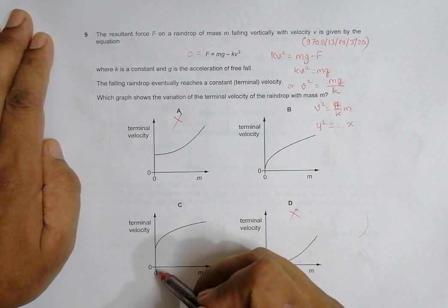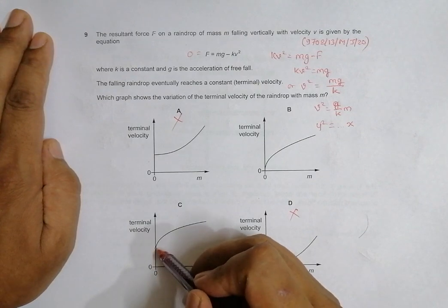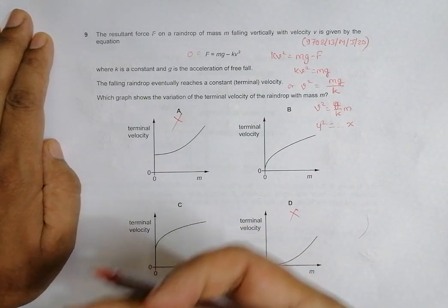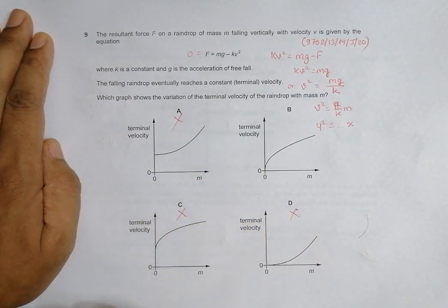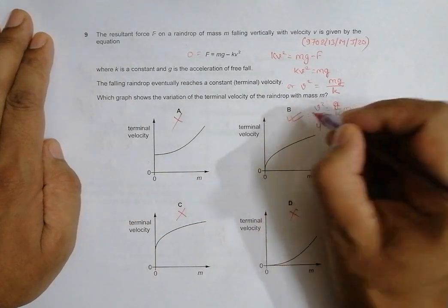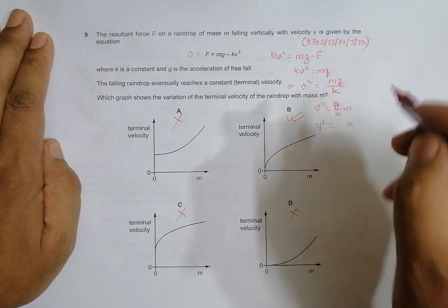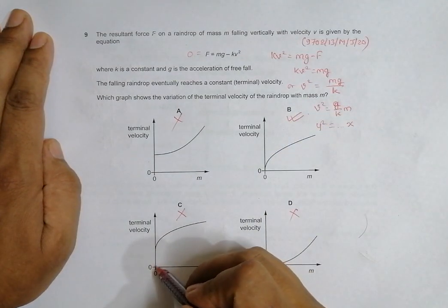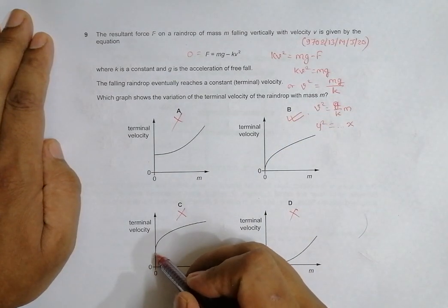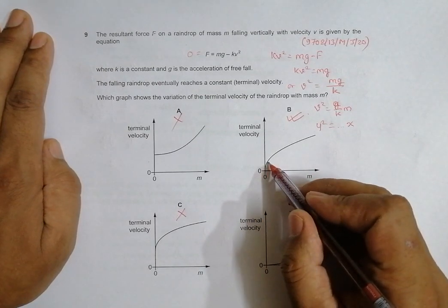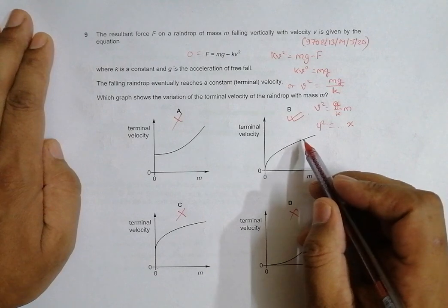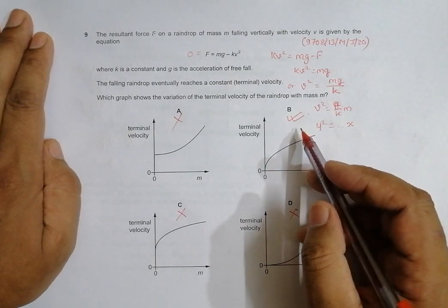But here at zero mass it has got some velocity. When mass is zero it can't have a velocity, so this is also a wrong choice. The only correct choice is B. At zero mass, zero velocity, and as soon as mass rises, some velocity. When mass rises further, again some velocity and so on. So B is correct.